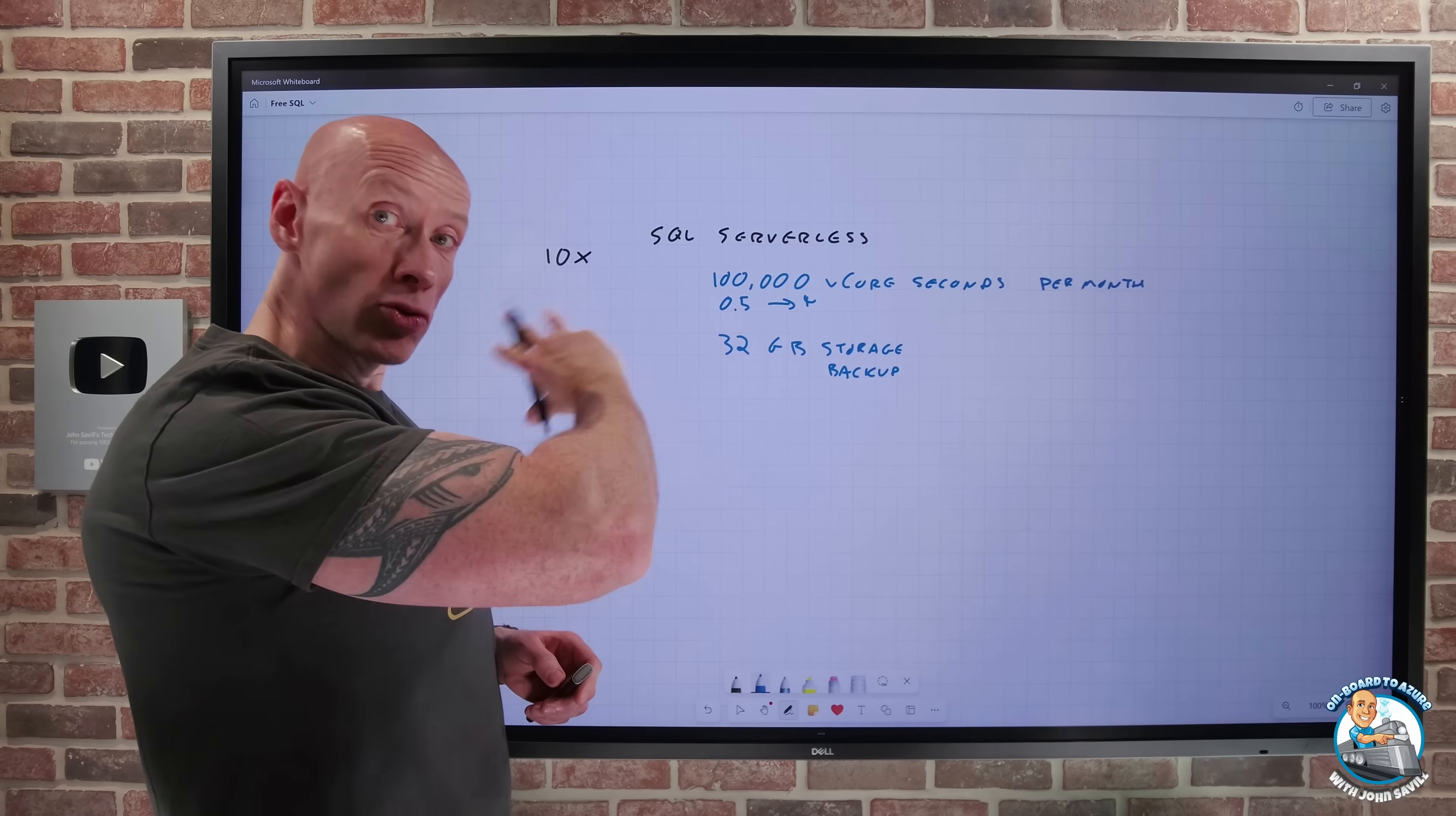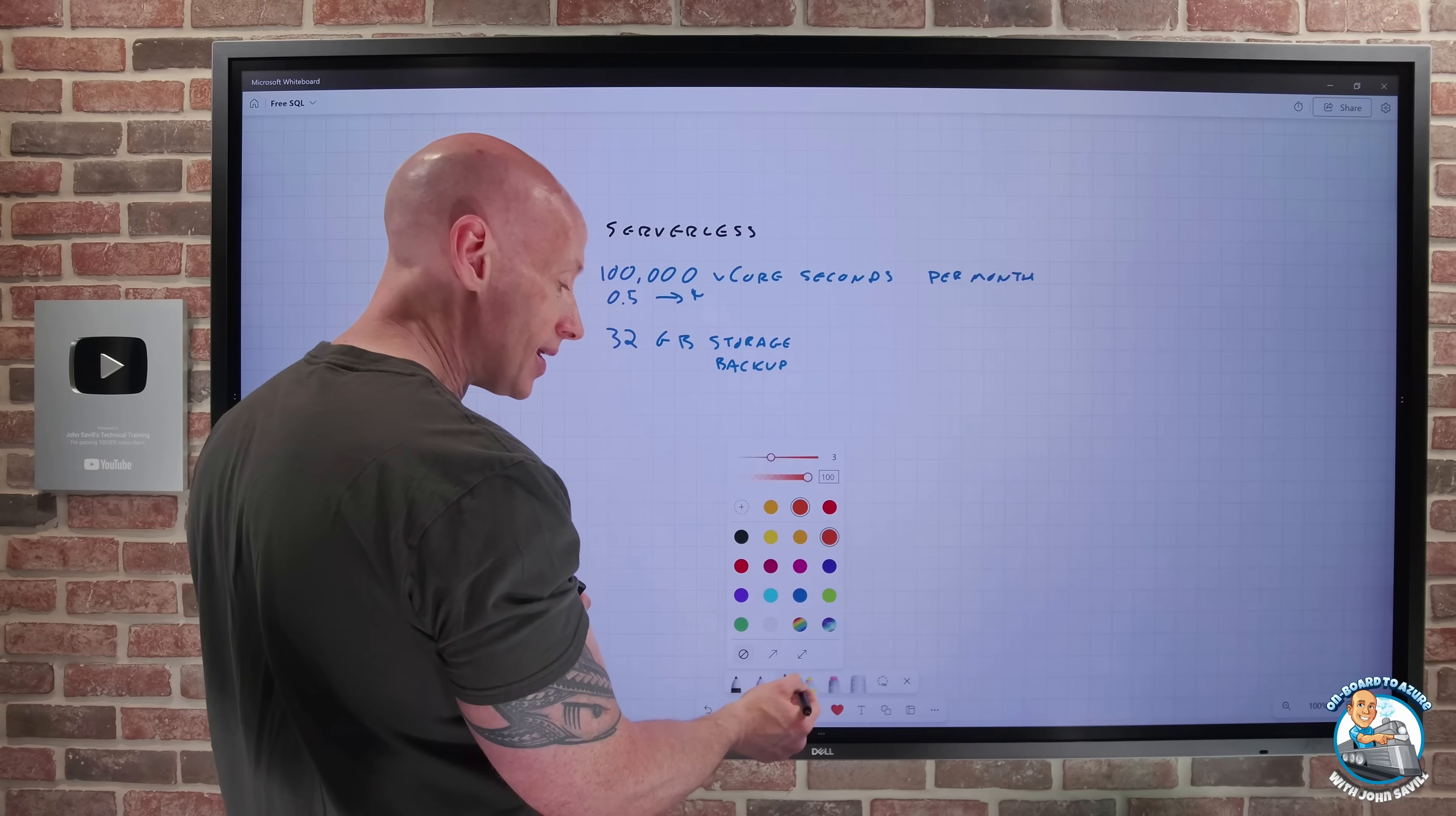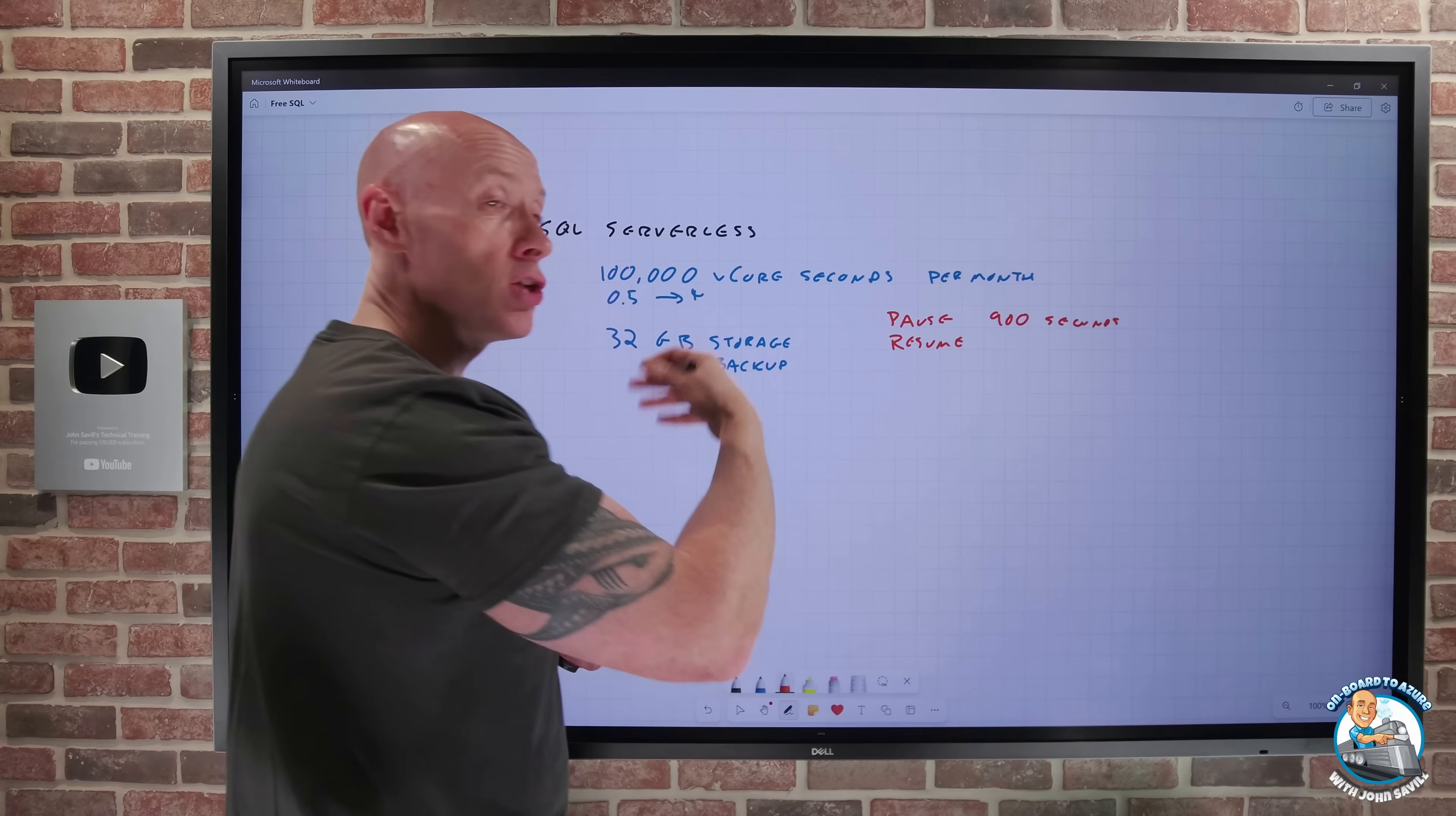We saw we get those options for pause until the month resets or pay for additional. And this is serverless. So one of the nice things about the serverless is when it's running, it will auto-pause after 15 minutes. So it will pause after, that means, 900 seconds of inactivity. And it will just resume when I try and use it again.